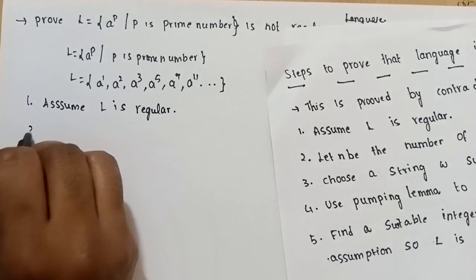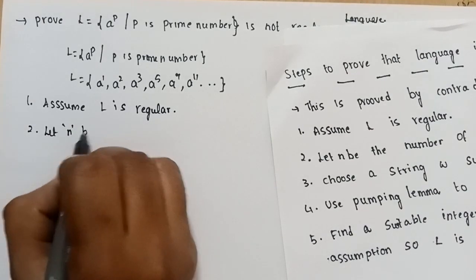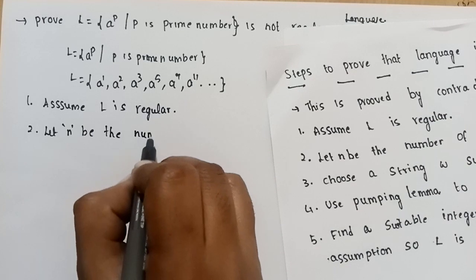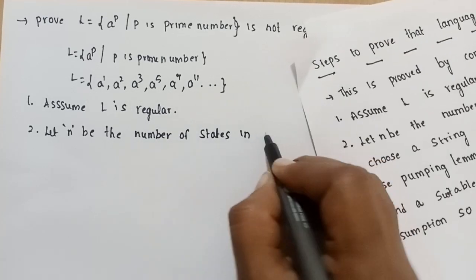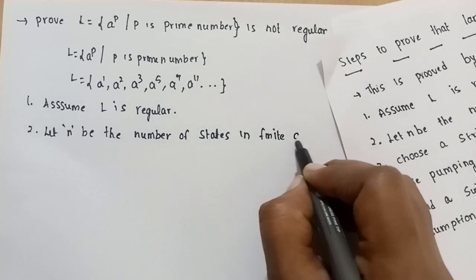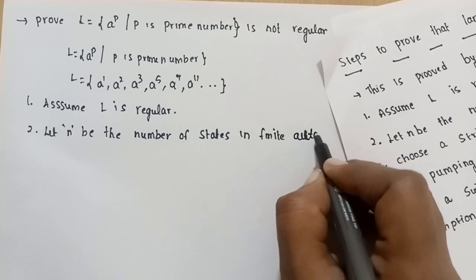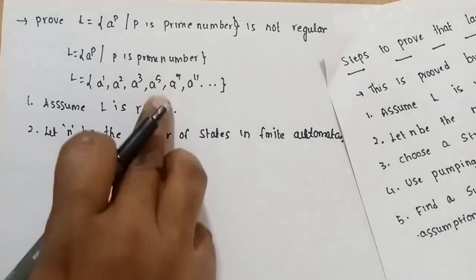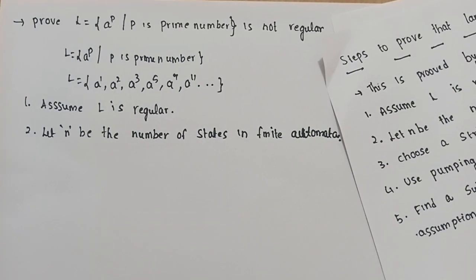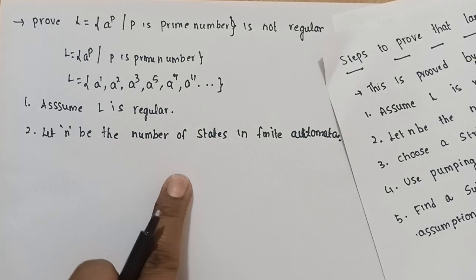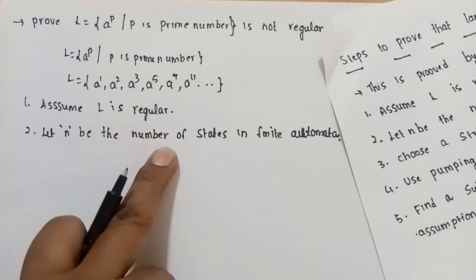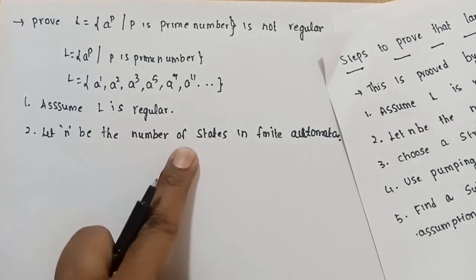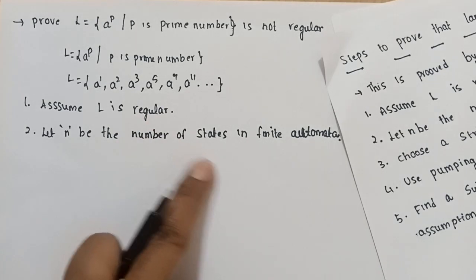Second step is let n be the number of states in a finite automata. This corresponds to this language. If it is a regular language, it is accepted by a finite state automata. So n is a constant.